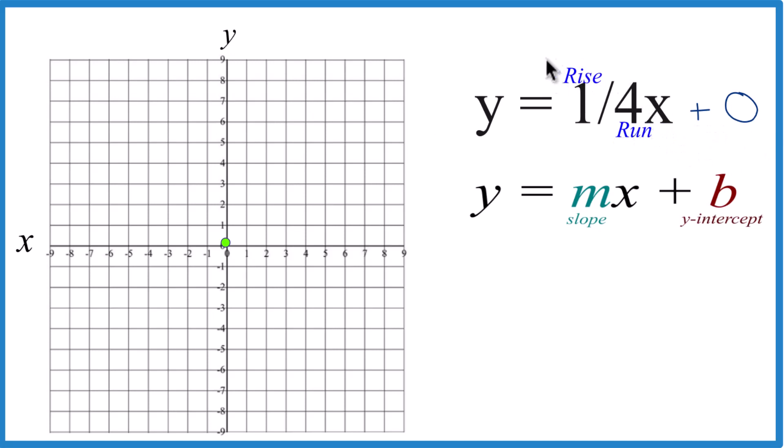So we'll rise one and run four. So we go to the y-intercept, we rise one, and we run one, two, three, four, right there. You could graph with two points, probably better to keep going here.